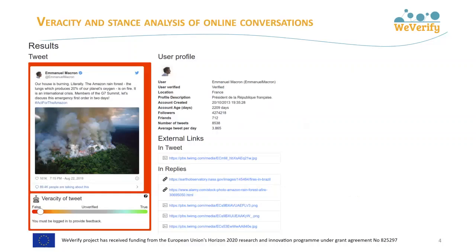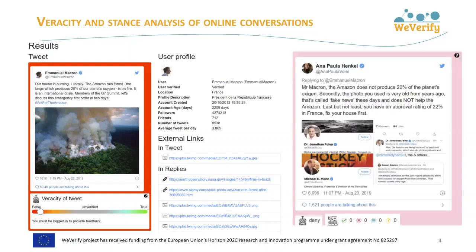Journalists often have to verify tweets, and sometimes the crowd has already provided some useful evidence and opinions in their replies. We developed a web-based UI that processes a given tweet URL, fetches its content, replies and user profile information, and analyzes them with the help of AI algorithms to determine which replies agree, disagree, question or comment on the original tweet. The background of the post being verified is colored according to the judgment by the veracity analysis algorithms.